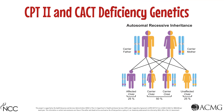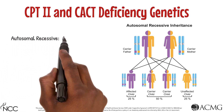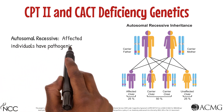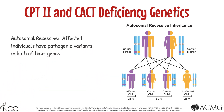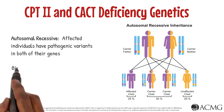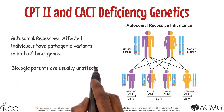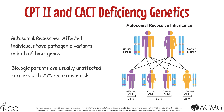Both CPT2 and CACT deficiency are inherited in an autosomal recessive manner, meaning that only infants with a pathogenic variant in both of their CPT2 or SLC25A20 genes will be affected. Parents with a child with either CPT2 or CACT deficiency are carriers and are unaffected, but have a 25% recurrence risk with any future children they have together.